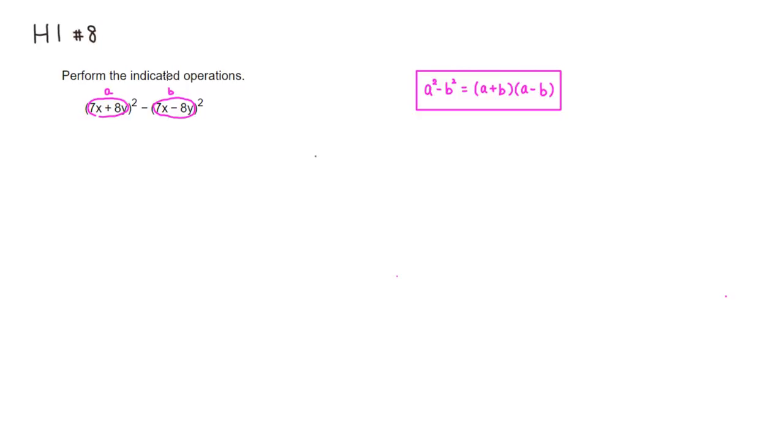So by writing down (a + b) times (a - b), we're going to get this. So here's a: 7x + 8y, and b is 7x - 8y.